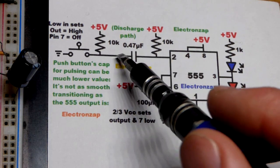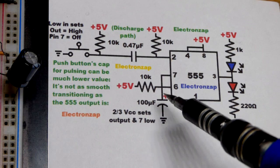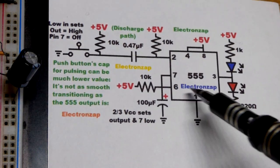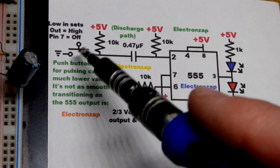And then now pin 2 will see 5 volts. Capacitor is completely charged, so it's high now even if we're pressing the switch, and pin 6 can set the output back low no problem.